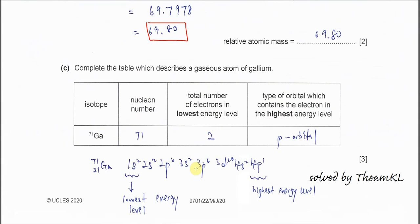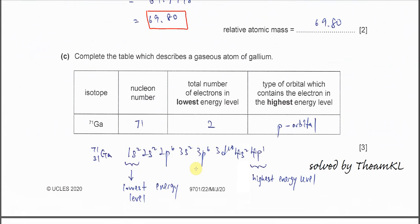For part C, at least you need to know the electronic configuration. Gallium is given, the nucleon number or the mass number is 71, proton number is 31. The nucleon number same as the mass number, that's given as 71. For this part, total number of electrons in the lowest energy level. Lowest energy level is 1s subshell. So in this 1s subshell means the 1s orbital. So it has two electrons there. So it's two.